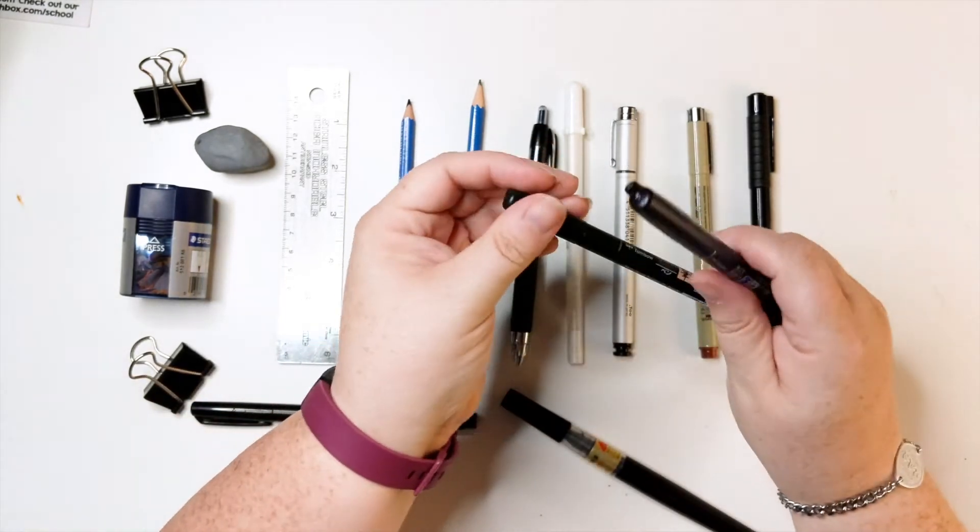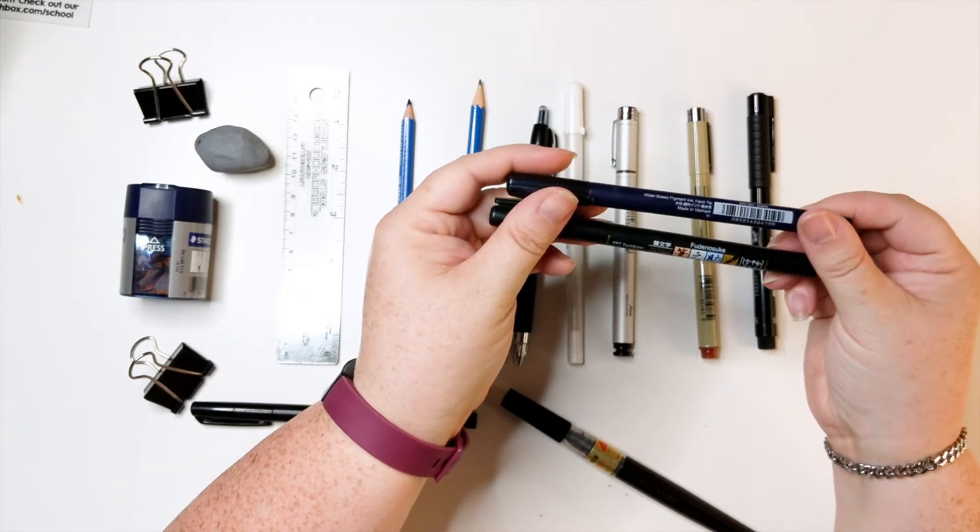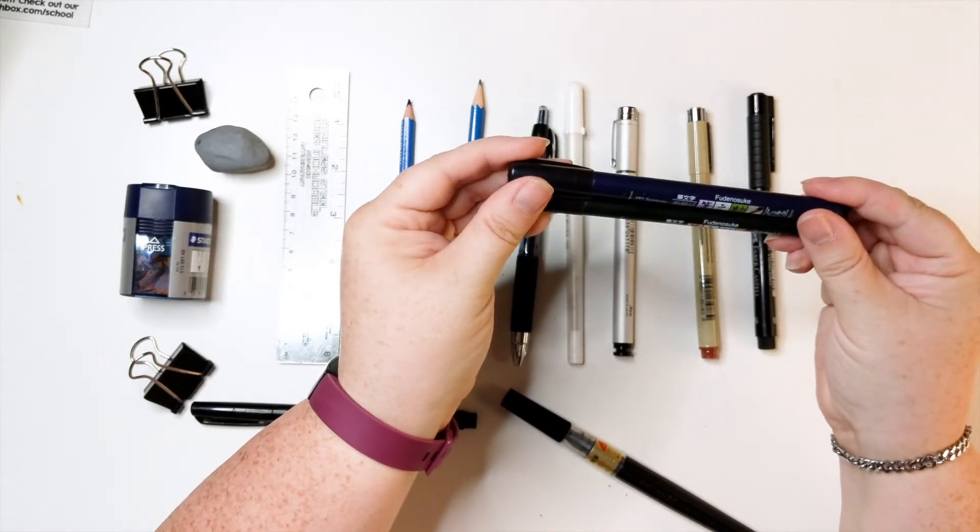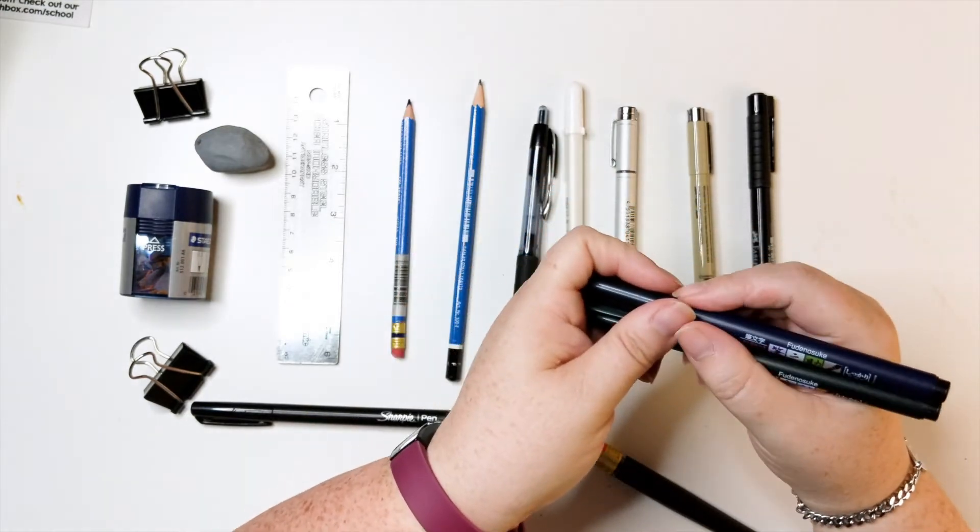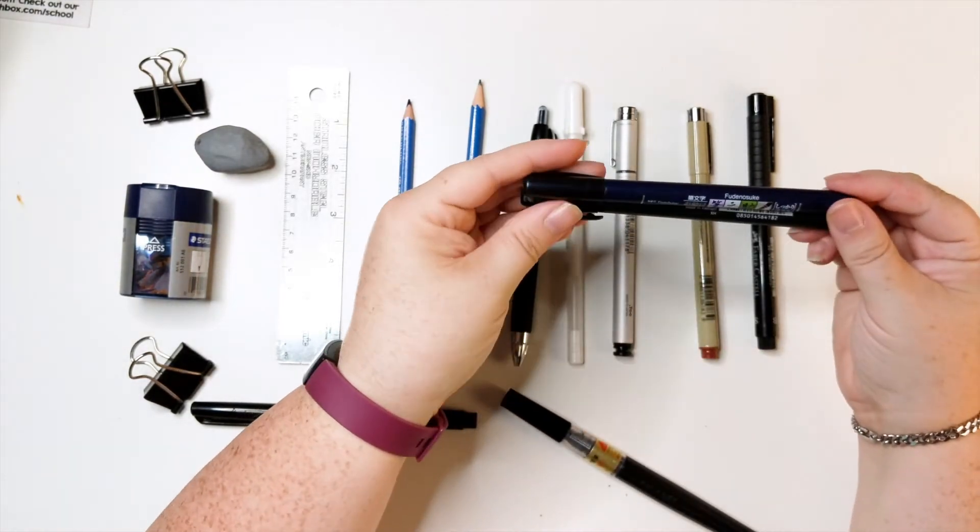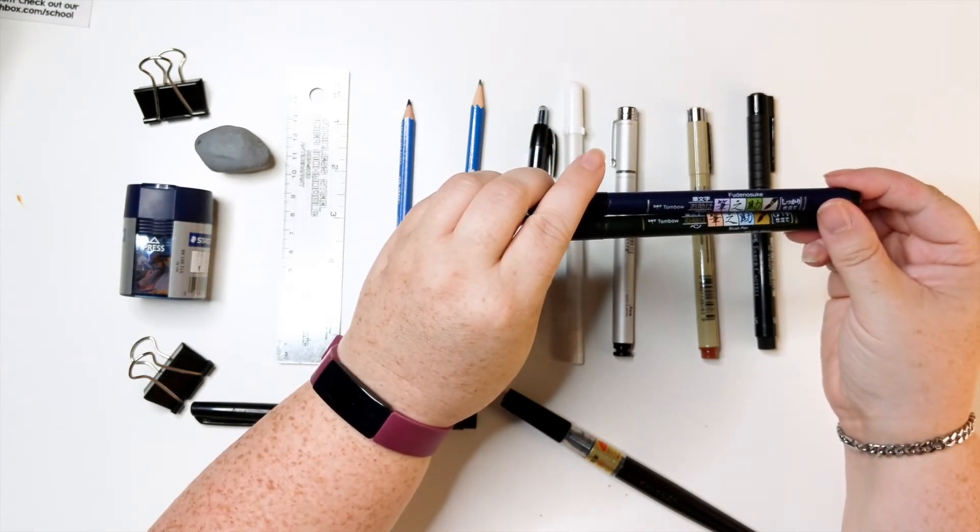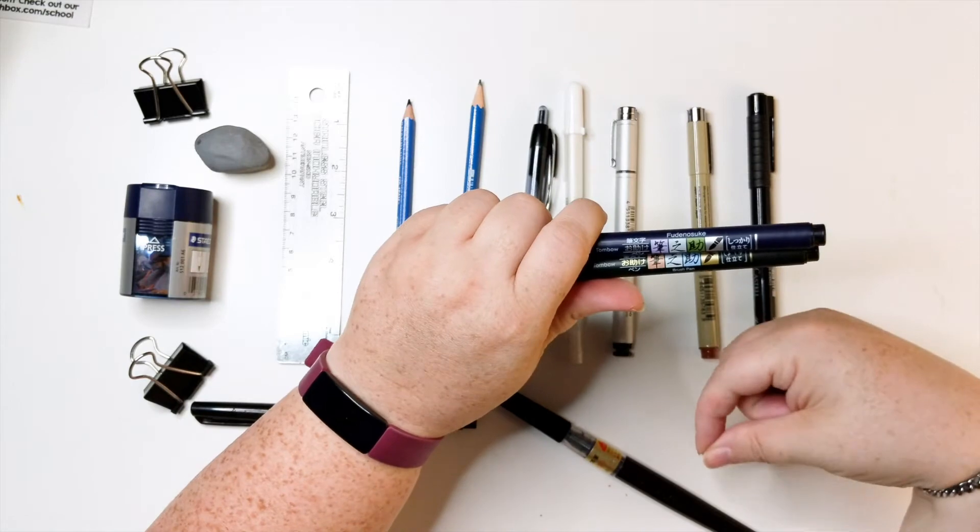These two are my Fudenosuke pens that are made by Tombow. They're really nice because depending on the pressure you can get more thicks and thins with them. I really, really like them. They add a little bit of variety instead of being a flat solid line.